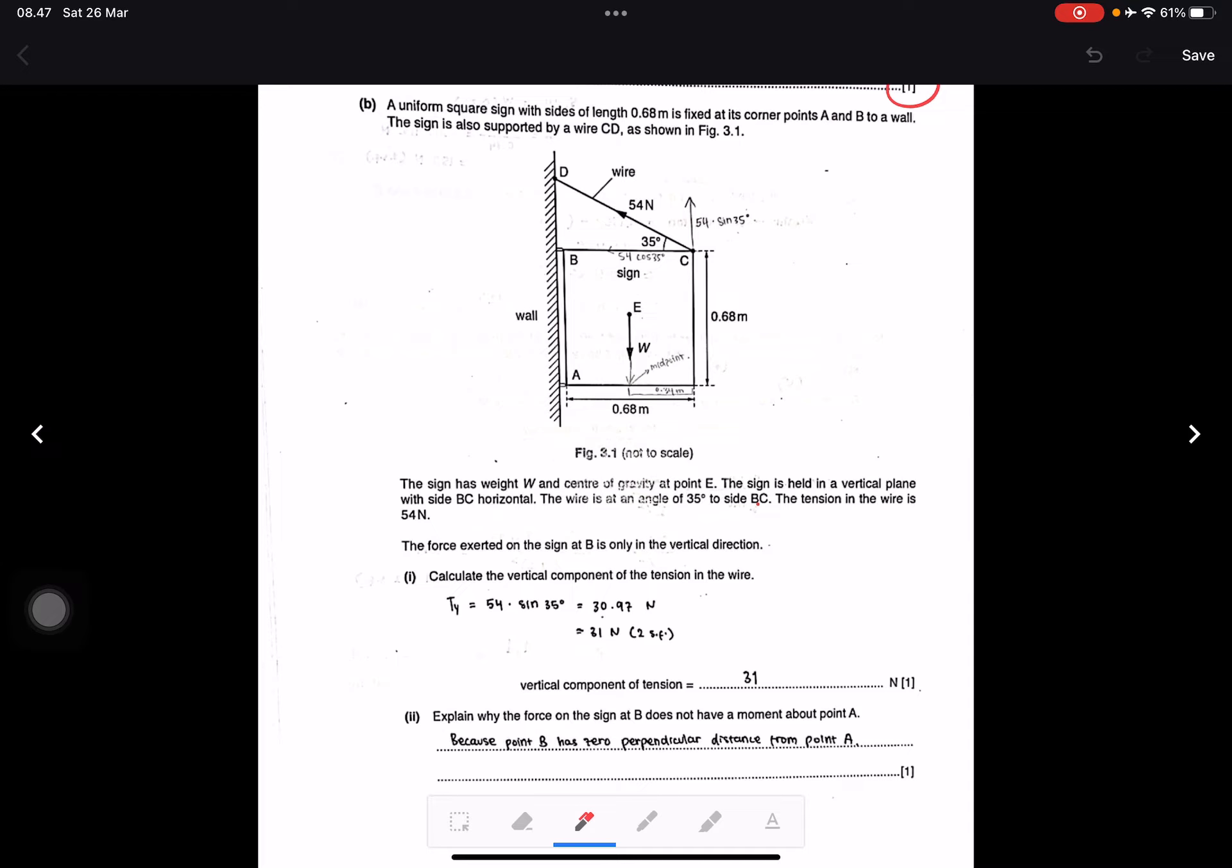Calculate the vertical component of the tension in the wire. This is 54 times sine 35 degrees. Yes, it's correct. That's correct. This is about 31 newtons.